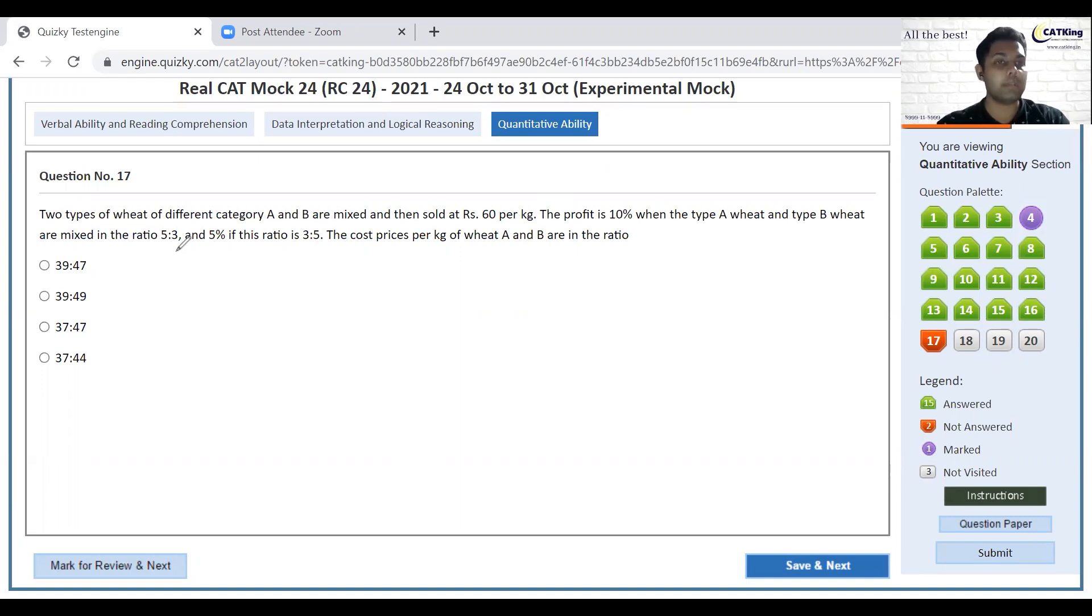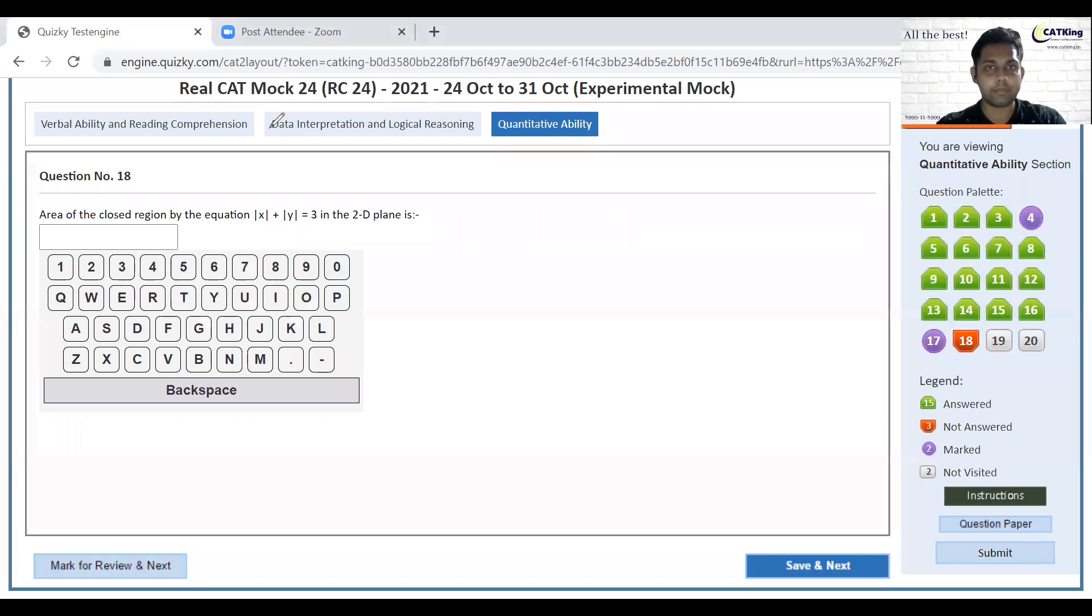Seems complicated, even the options seem pretty weird. I'll ignore this sum. Ah, mod x equals mod x equals 3, so basically we'll have 3, 3, 3, 3. The length would be 3 root 2. 3 root 2 to the whole square, we will get 9 into 2, which is 18.